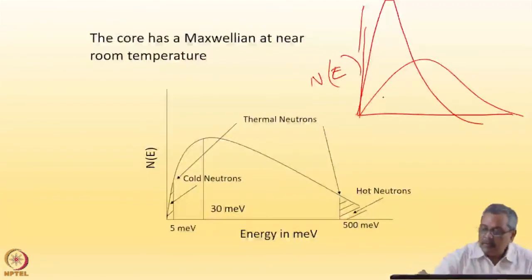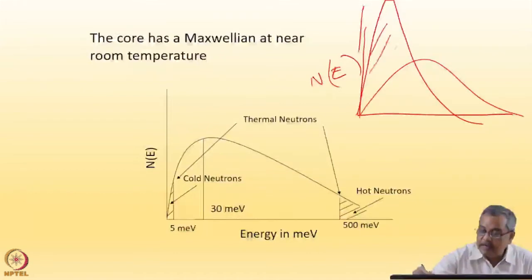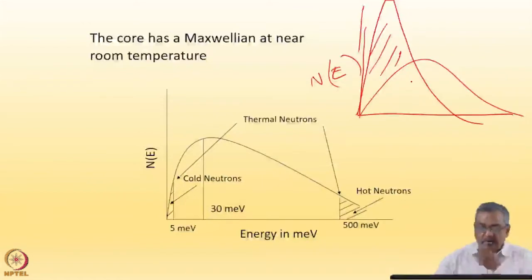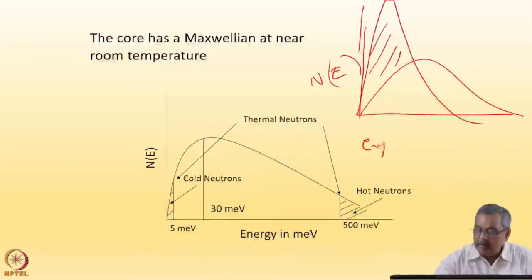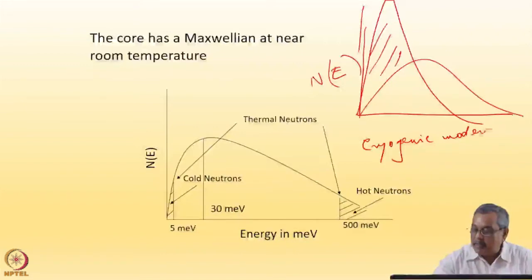For some experiments we need neutrons with lower energies, and for some experiments we need neutrons in the thermal energies. So in some parts of the reactor or the spallation target, we can insert a cryogenic moderator — that means a moderator at low temperature.